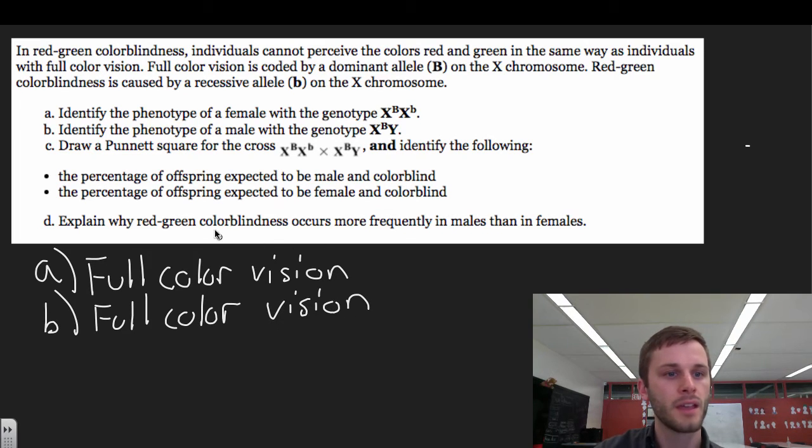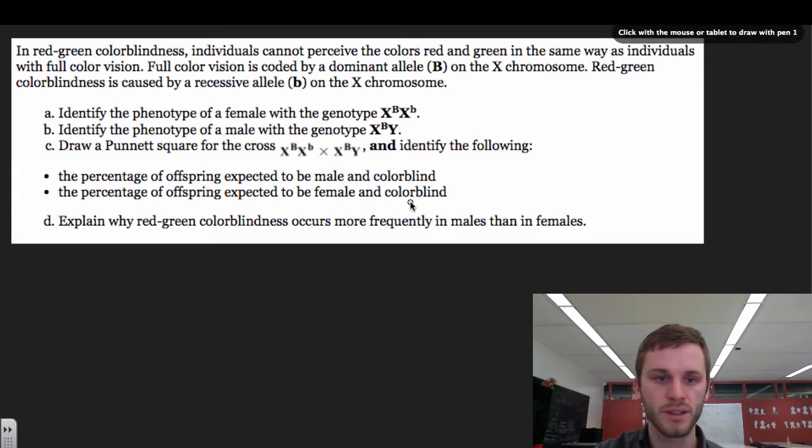Okay. It's going to get a little fancier here now. Draw a Punnett square for the cross for this right here and identify the following. We've got to figure out the percentage of offspring expected to be male and colorblind, and the percent of offspring expected to be female and colorblind. So I'll clear this out here so we have a little more space to write. Part C. So let's draw a Punnett square to start.